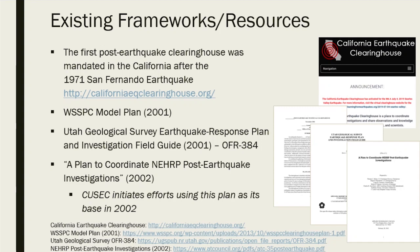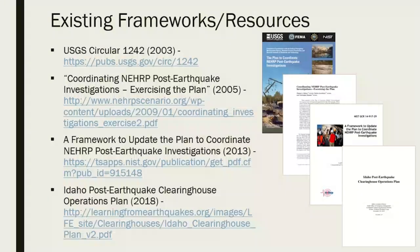The first mandated clearinghouse was in California following the 1971 San Fernando earthquake. A model plan was published in 2001, and Utah came in with a plan in 2001 as well. Very importantly, a plan to coordinate NEHRP post-earthquake investigations was a report that created some of the CUSAC — Central U.S. Earthquake Consortium — efforts to adopt and create clearinghouse plans for their region. One key component is that they already have memorandums of understanding and agreements in place. The closest thing to a national framework is the USGS Circular 1242, written in 2003, which is now being looked at for updating.